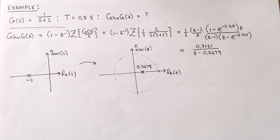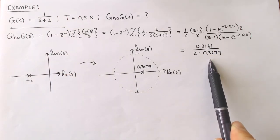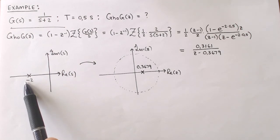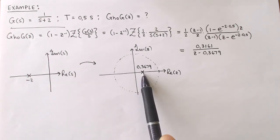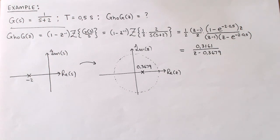If we compare the continuous and discrete transfer functions, we see that the continuous pole at −2 is mapped to a discrete pole at 0.368. This is the conclusion of the first step in the direct digital design process. For the remainder of the module we will focus on the second step, which is designing a discrete controller to control the equivalent discrete plant.